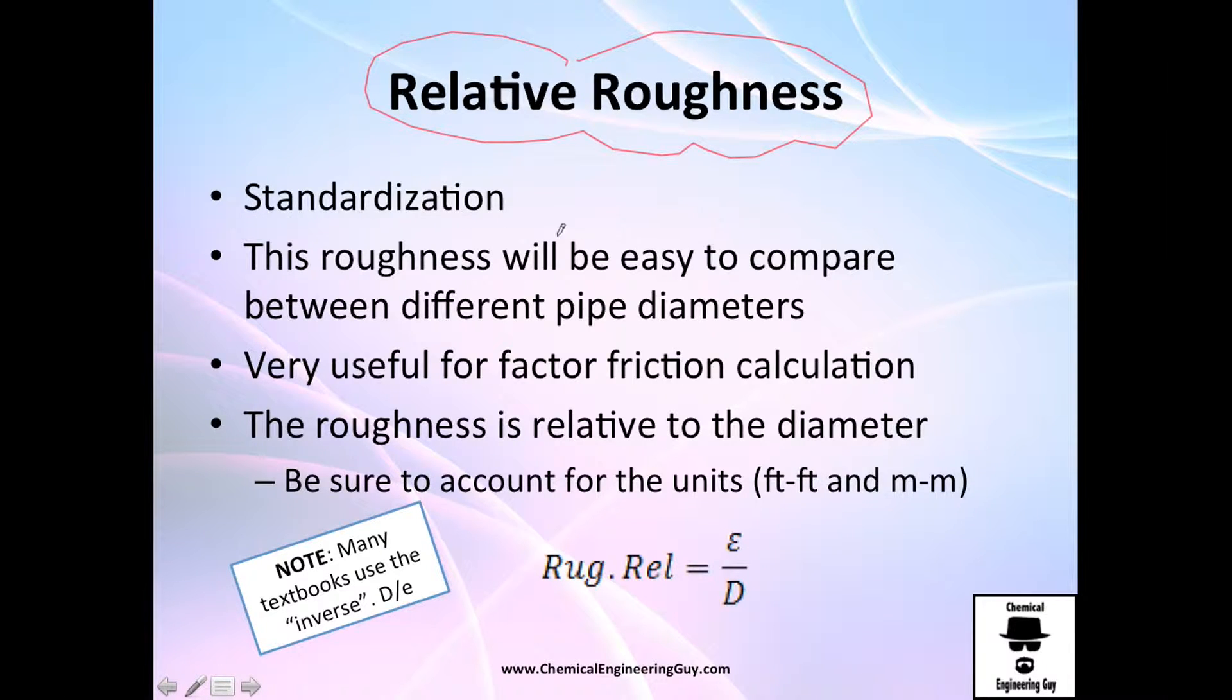What I want to show you is the relative roughness, which is the concept we will be using along this course. This is a normalization or standardization which takes into account the diameter of the pipe. So let's say we have a small pipe and a big pipe.